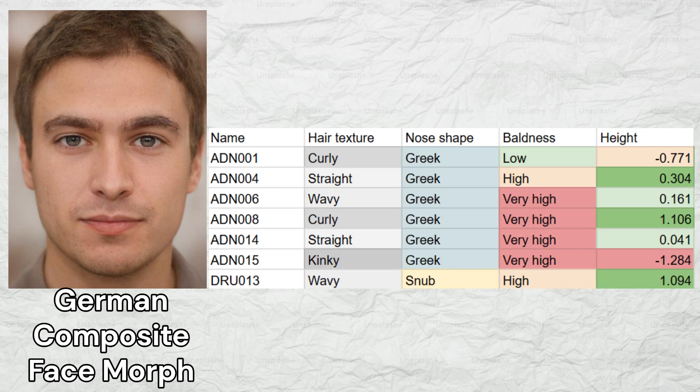Two people had wavy hair, two people had curly hair, two people had straight hair, and one person had kinky hair texture. Six out of seven samples were predicted to have a Greek nose shape, but there was one sample with a snub nose shape prediction. The samples as a whole had a very strong predisposition to male pattern baldness and were taller than average.